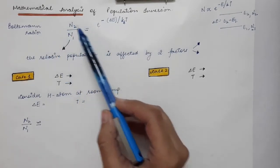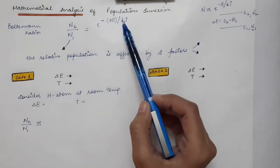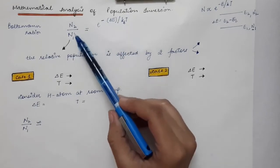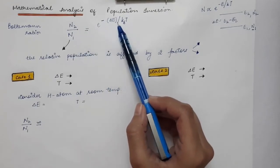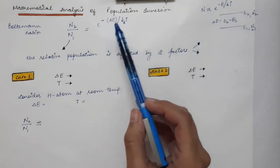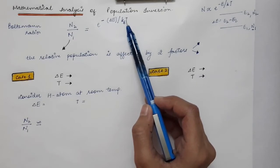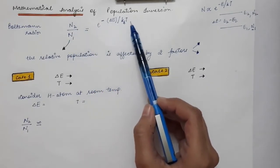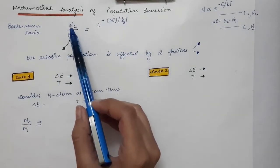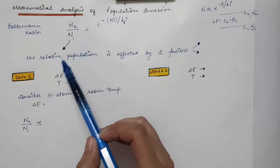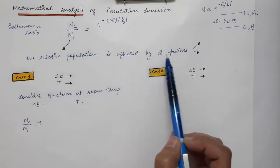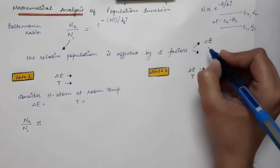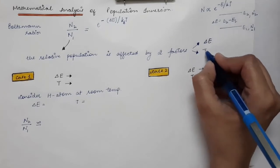The Boltzmann ratio n2/n1 = e^(-ΔE/kBT) depends on two factors: the energy difference ΔE between the two states, and the temperature T. The Boltzmann constant kB is a universal constant. By changing the medium you change ΔE, and you can also vary the temperature. This ratio, which gives the relative population of the two states, is affected by these two main factors.